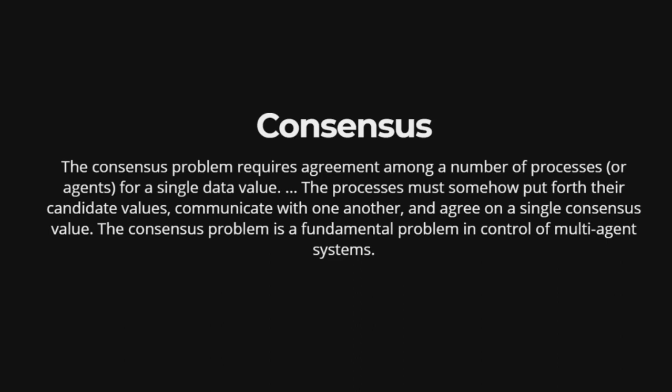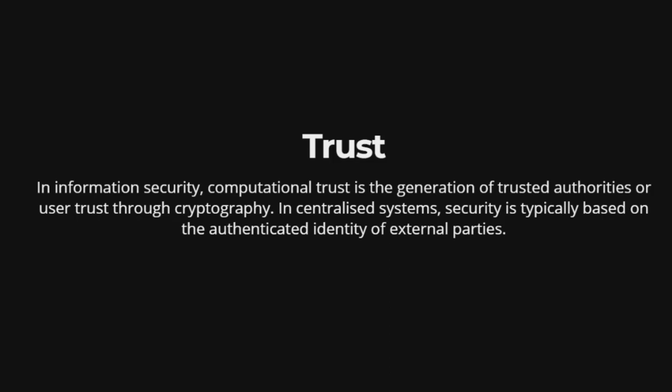Consensus. The consensus problem requires agreement among a number of processes or agents for a single data value. The processes must somehow put forth their candidate values, communicate with one another, and agree on a single consensus value. Trust: In information security, computational trust is the generation of trusted authorities or user trust through cryptography. In central systems, security is typically based on the authenticated identity of external parties.